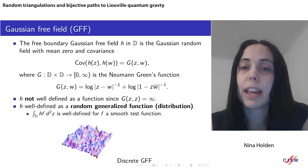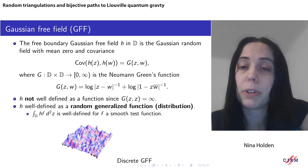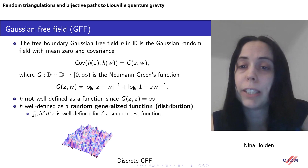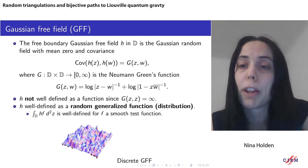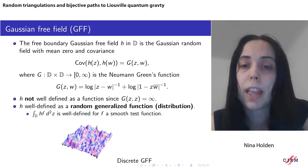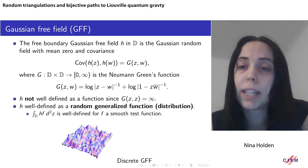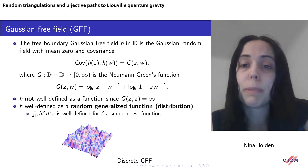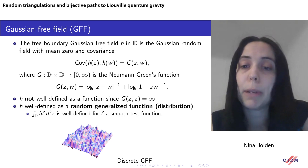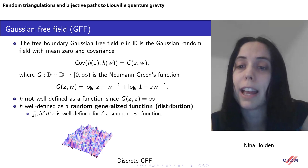Next I want to introduce Liouville quantum gravity, starting with the Gaussian free field. The free boundary Gaussian free field is the Gaussian random field in the unit disc with mean zero and covariance given by the Neumann Green's function. This Neumann Green's function is given by the formula shown, and in particular the covariance blows up logarithmically as the two points z and w approach each other. The Gaussian free field cannot be well-defined as a function because the Neumann Green's function is infinite on the diagonal.